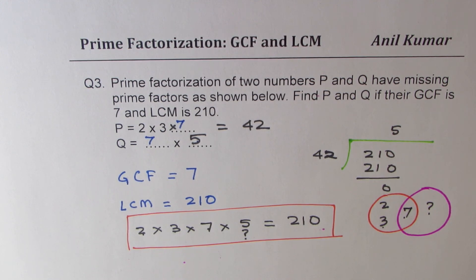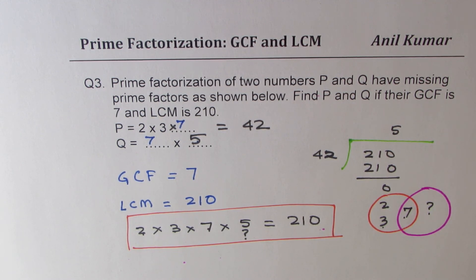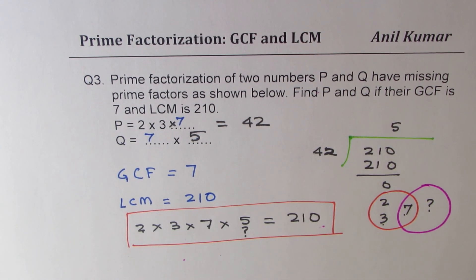These three are very critical thinking questions based on prime factorization, where the application is to find lowest common multiple and greatest common factor. I hope you've understood how to solve them. Feel free to write your comments and share your views. If you have any doubts, don't hesitate. Thanks for watching and all the best.